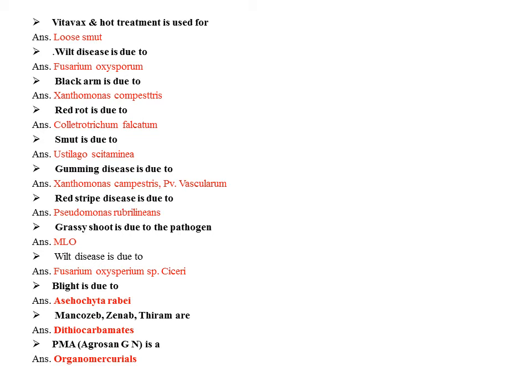Wilt disease in cotton is caused by Puccinia graminis tritici. Moving to sugarcane: red rot disease is caused by Colletotrichum falcatum.